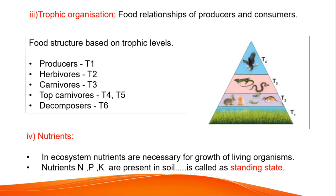Next, coming to nutrients. In an ecosystem, nutrients are necessary for the growth of living organisms. Nutrients like nitrogen, potassium, and phosphate are present in the soil. This is called the standing state.